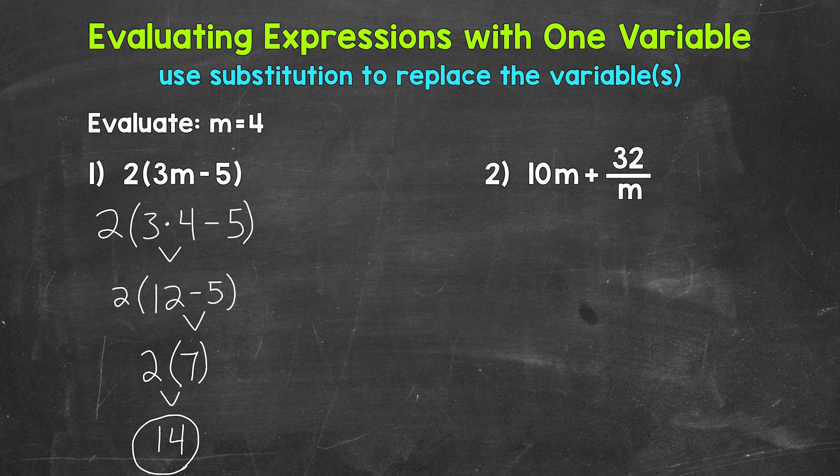Let's move on to number 2, where we have 10m plus 32 over m. Now we have one variable, m, but it's in two places. So when we plug in, we need to make sure we plug in that value for m in both of those places. For this expression, we have a number next to a variable, so we are multiplying here. We have 10 times m, and then we have a fraction. We have 32 over m. That means we are dividing. We have 32 divided by m.